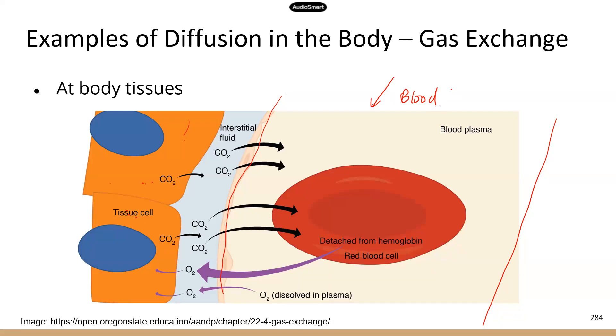Now, at tissue levels, the blood that's coming in is oxygenated blood. So it's high in oxygen and low in carbon dioxide. Now, when you look at the tissue cells, they are the opposite.